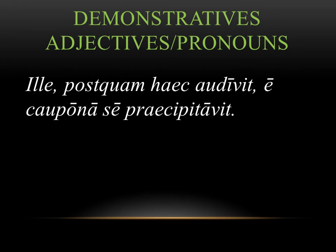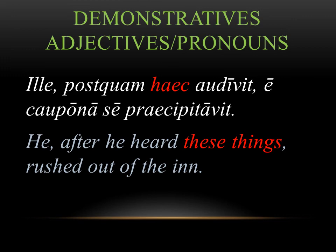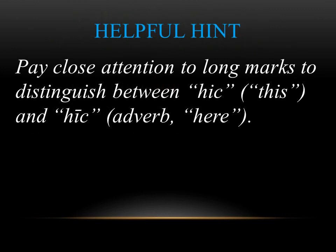Let's take a look at a sentence: ille, postquam haec audivit, e caupona se praecipitavit — he, after he heard these things, rushed out of the inn. The demonstrative ille has no noun going with it, so it's acting as a pronoun; since ille is masculine, we translate it as he. The second demonstrative haec also has no noun — haec is neuter plural, so we translate it as these things. A helpful hint: pay close attention to macrons to distinguish hic (this) from hic, the adverb that means here. When talking about demonstrative pronouns, there's no long mark over that i.